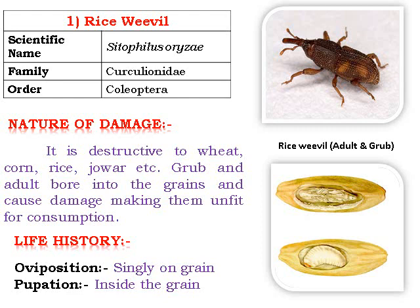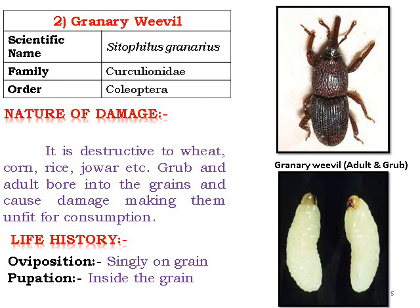The granary weevil, Sitophilus granarius, from Order Coleoptera, is destructive to wheat, corn, rice, and jowar. Grubs and adults bore into grains, causing damage and making them unfit for consumption. This pest can be found even in small kirana shops. Egg position is singly on the grain, and pupation occurs inside the grain. This is the pictorial presentation of the granary weevil.